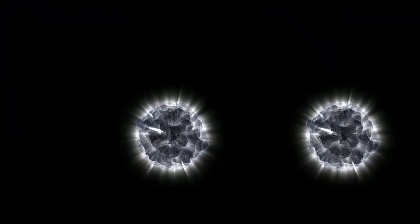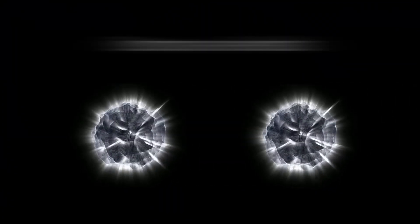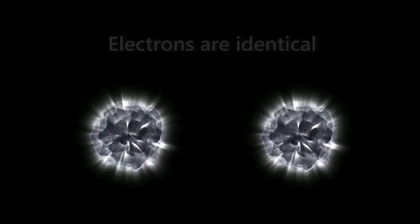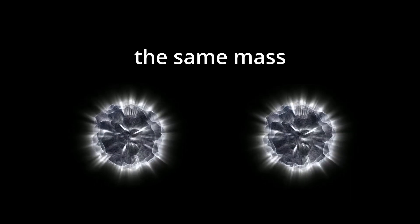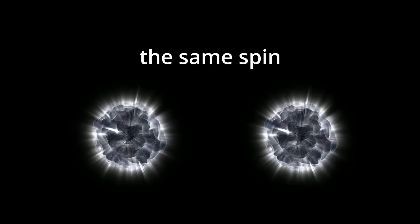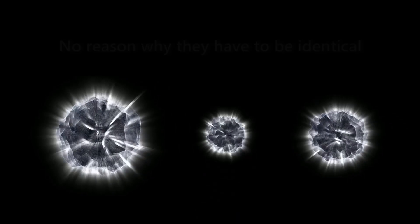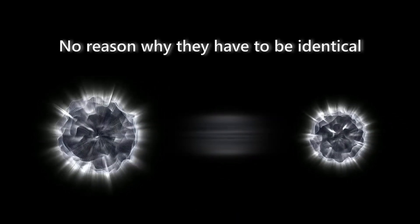Electrons are strange. What's worse, they're all strange in exactly the same way. Every electron is identical to every other electron. They all have the same mass, the same electric charge, and the same spin. If you think about it, there's no actual reason why they have to be identical.